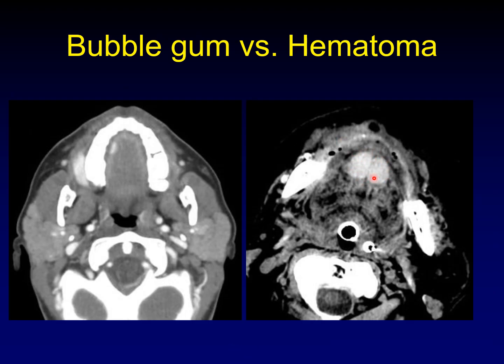This is a hematoma in the floor of mouth. This is bubble gum that has been tucked up on the inside of the cheek, maybe a little bit near the tongue there.